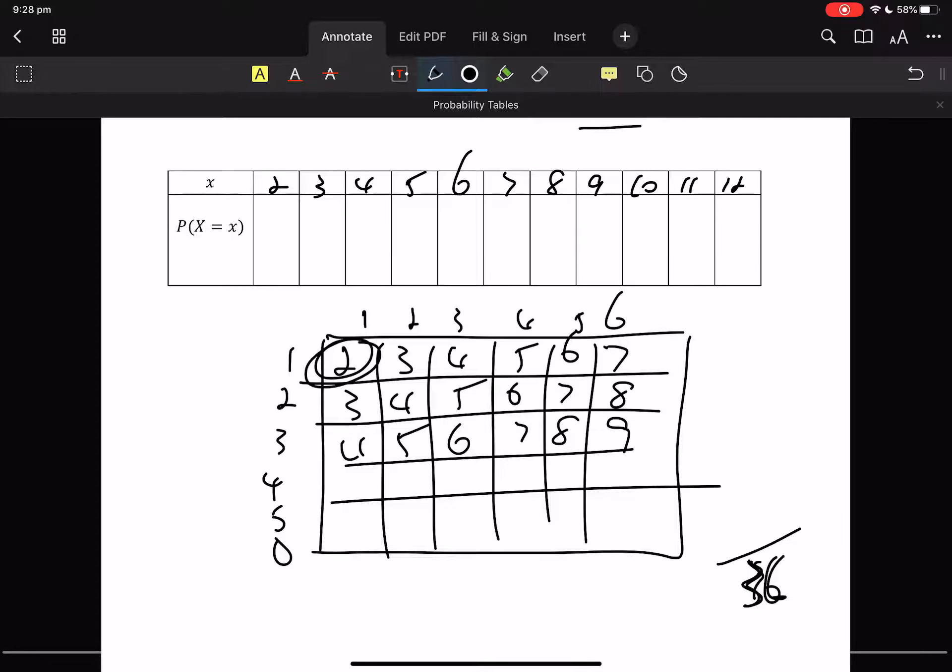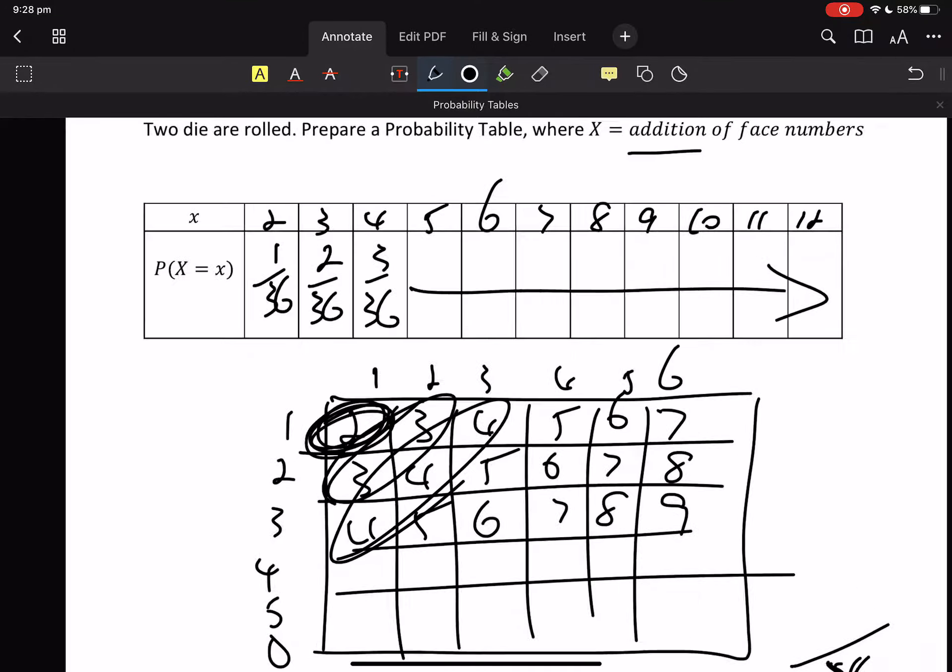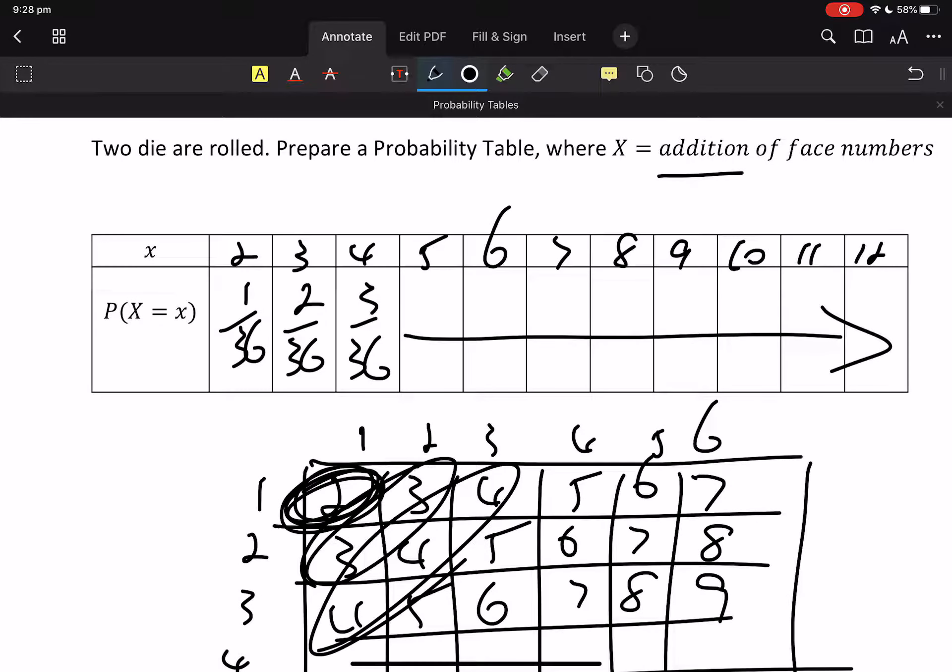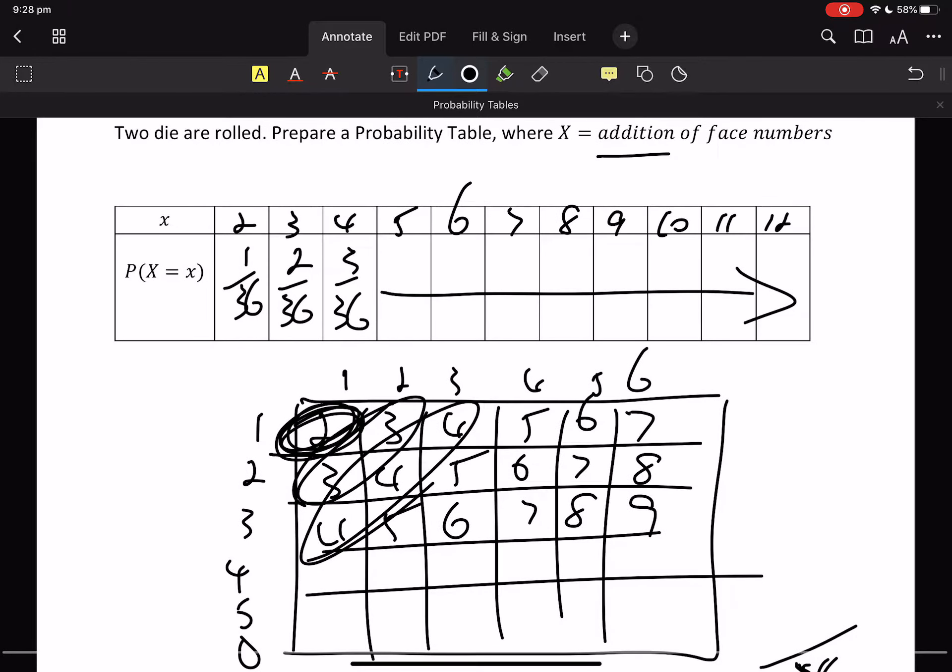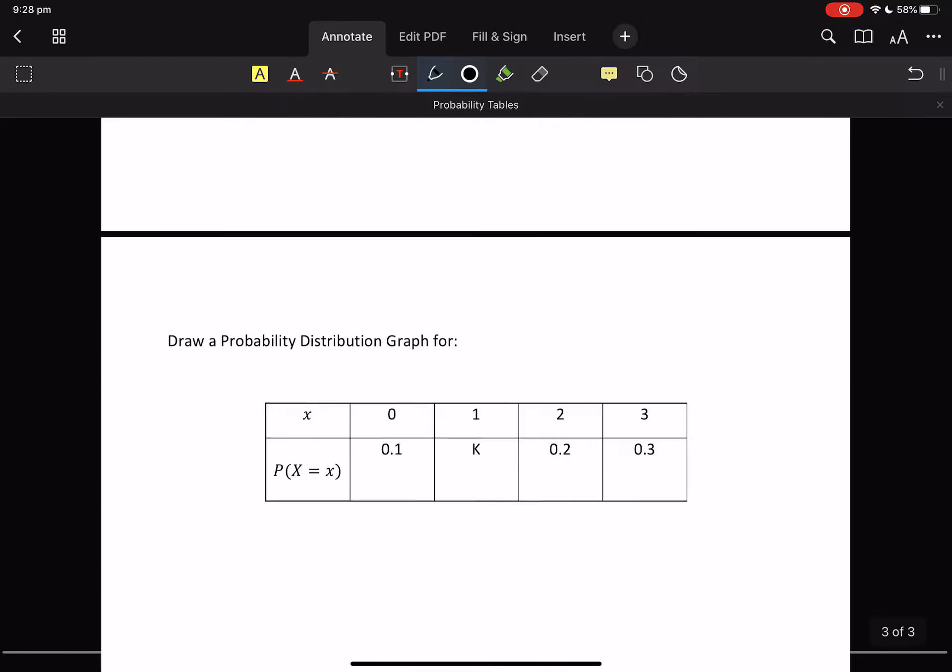How many 2s do we have? We have 1 on 36. How many 3s do we have? 2 on 36. How many 4s do we have? And you're going to go through and put all of those values in. And then that's your probability table. Done. Absolutely done. Not rocket science.